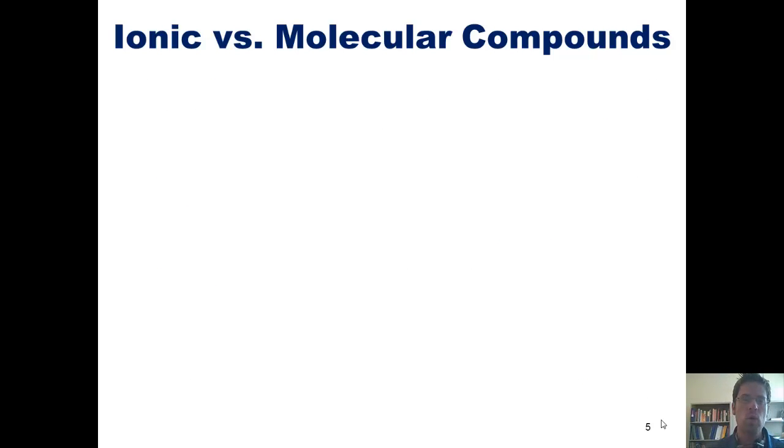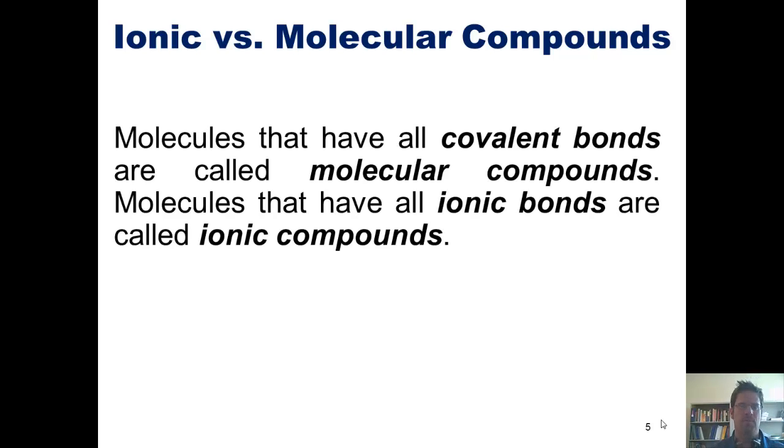Which brings us to some cool new terms. Molecules that have all covalent bonds in them are called molecular compounds. Molecules that have all ionic bonds are called ionic compounds.